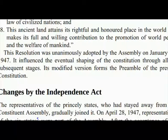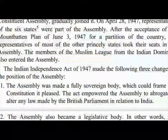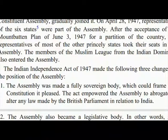Changes by the Independence Act: The representatives of the Constituent Assembly gradually joined it. On April 28, 1947, representatives of the six states were part of the assembly. After the acceptance of the Mountbatten Plan of June 3, 1947 for a partition of the country, the representatives of most of the other princely states took their seats. The Indian Independence Act of 1947 made the assembly a fully sovereign body, which could frame any constitution it pleased, empowered to abrogate or alter any law made by the British Parliament in relation to India.